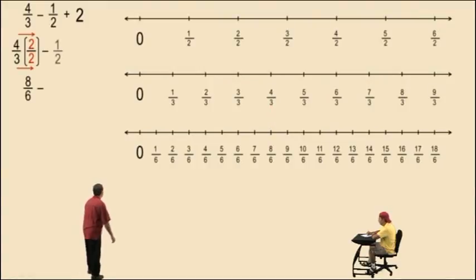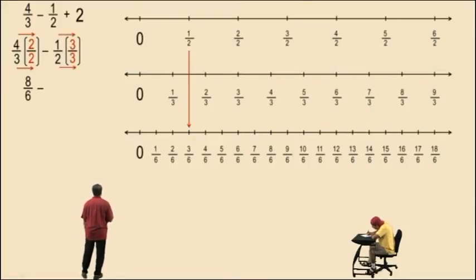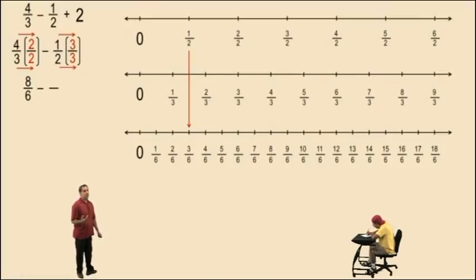Let's go to 1 half. 1 half is equivalent to 3 sixths. So notice, we're going to multiply 1 half times 1, but we're going to rewrite the 1 as 3 over 3. 2 times 3 is 6, and 1 times 3 is 3. And that gives us 1 half is equal to 3 sixths. They're equivalent.